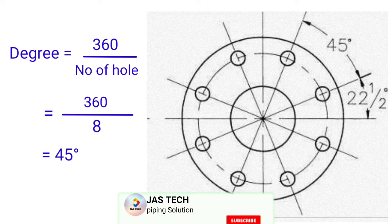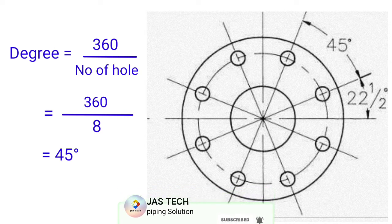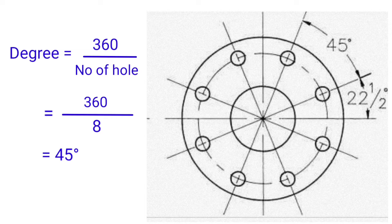First step to find out the degree: 360 degrees divided by number of holes. 360 divided by 8, as per our standard 12 inch 150 pound has 8 holes. So 360 divided by 8 equals 45 degrees.